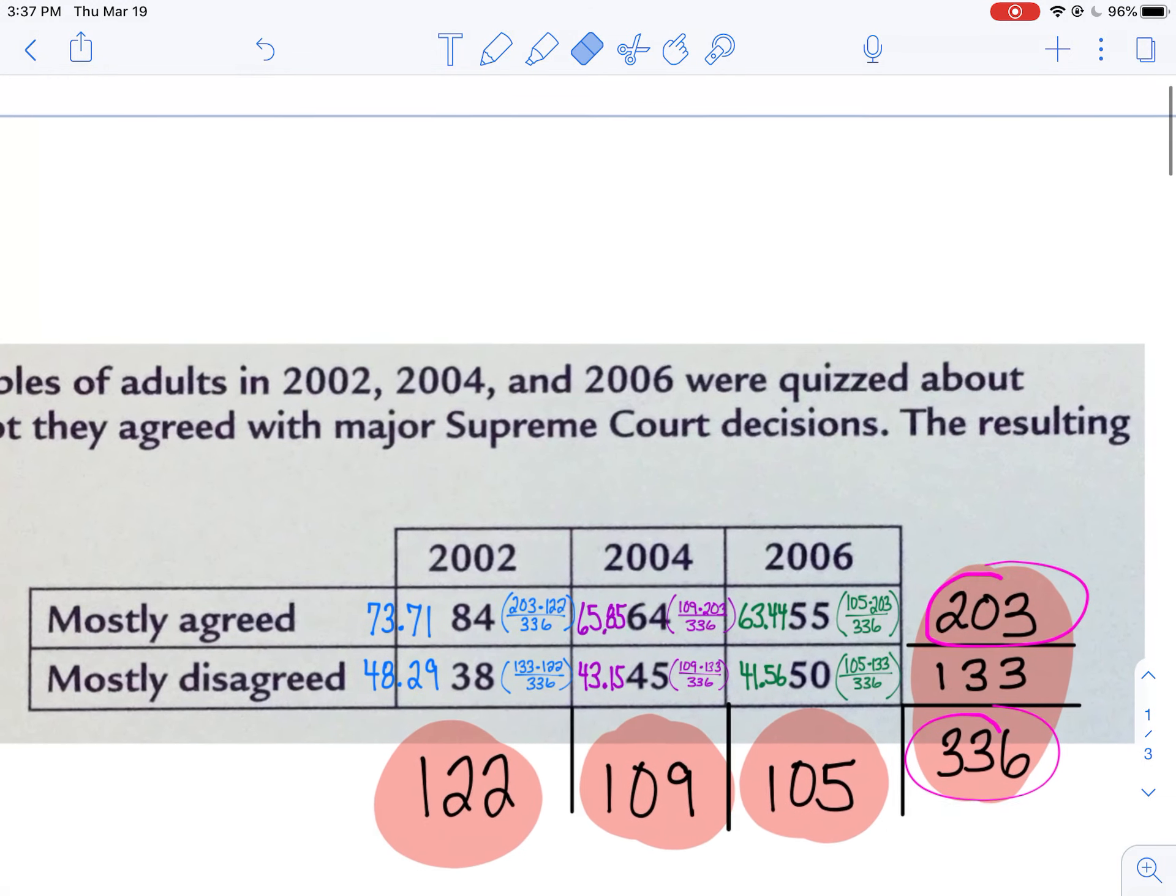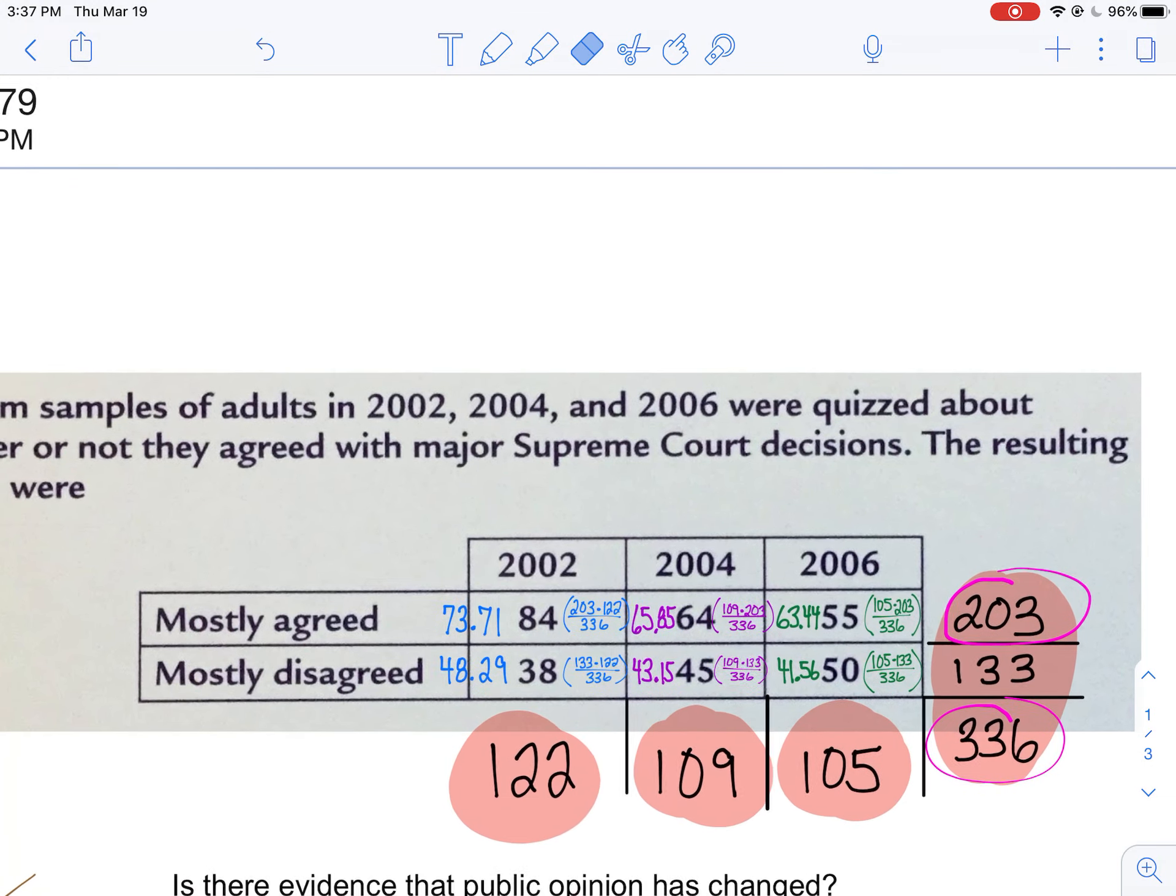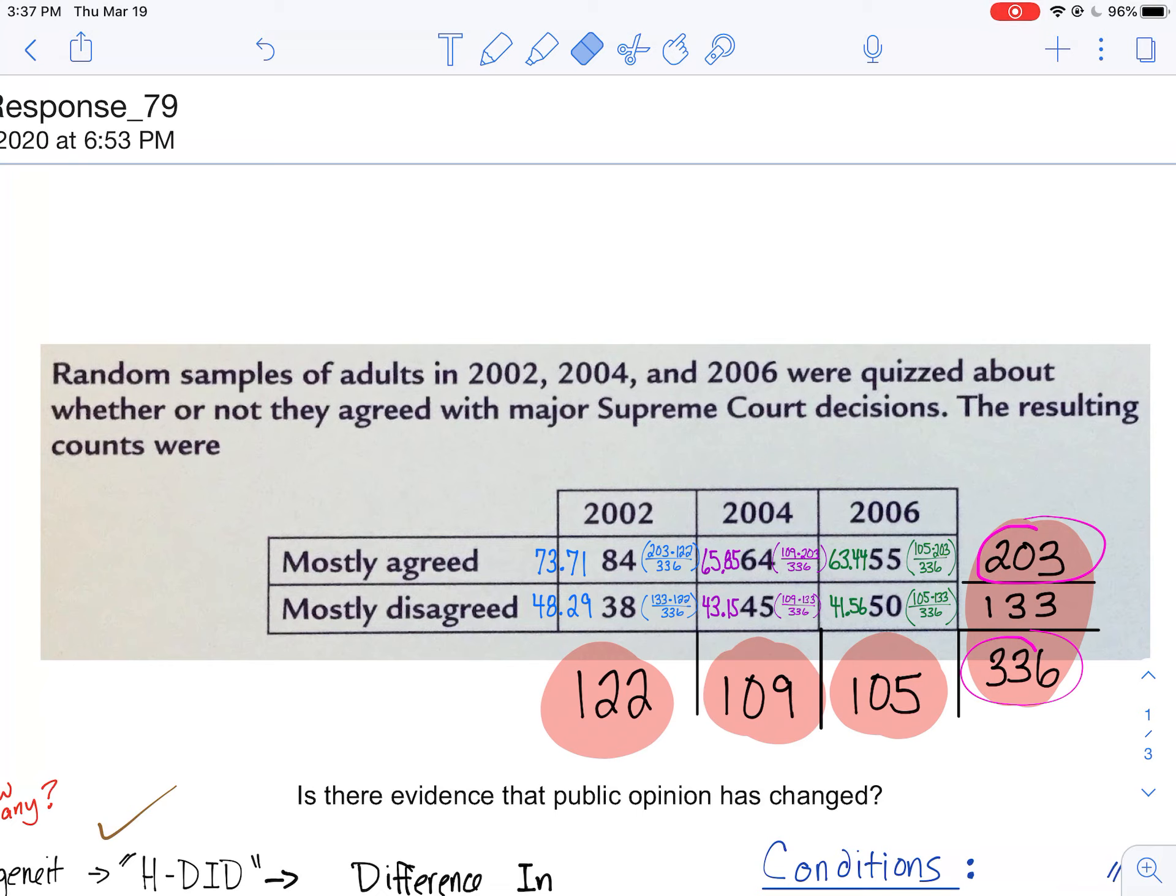Anyway, you'll notice I set up most of this problem to begin with, but to walk you through, random samples of adults in 2002, 2004, and 2006 were quizzed about whether or not they agreed with major Supreme Court decisions.